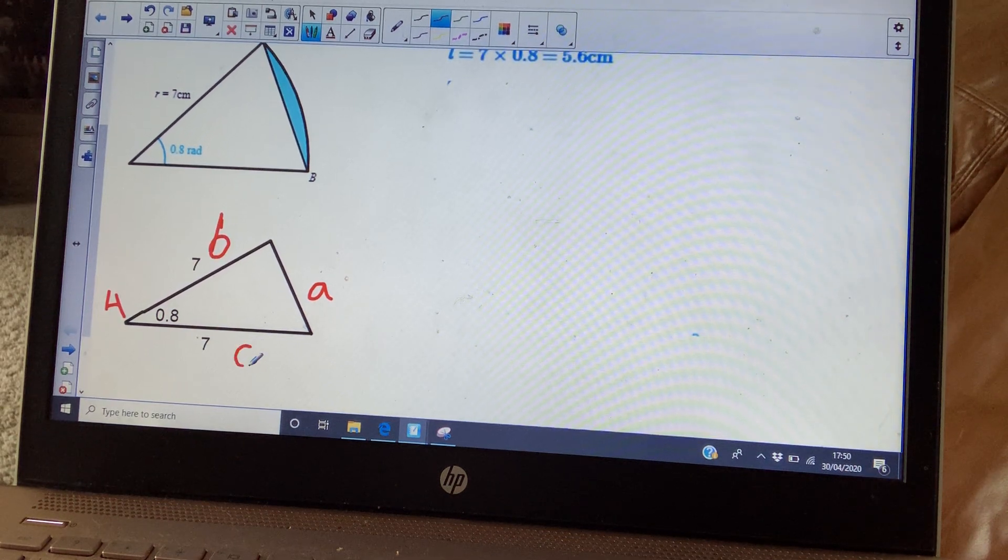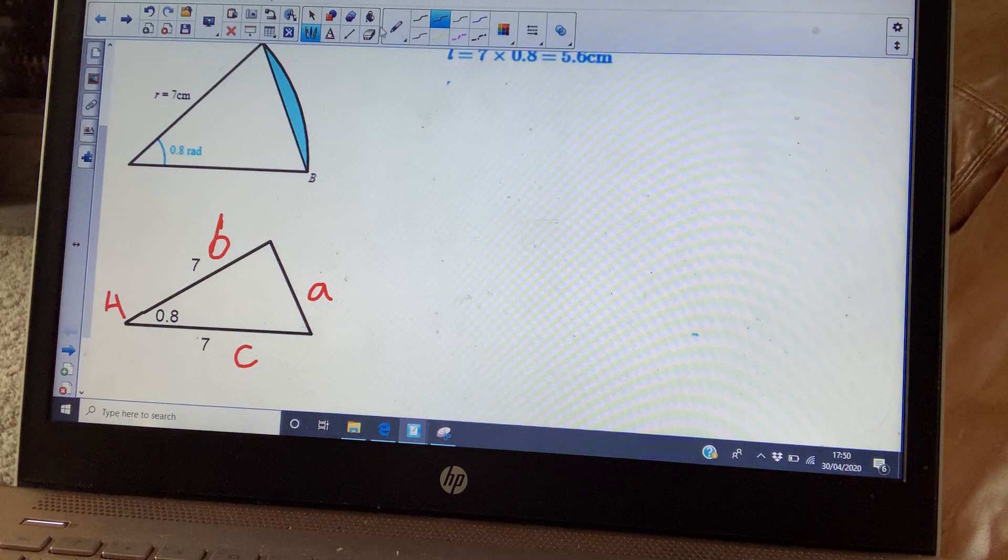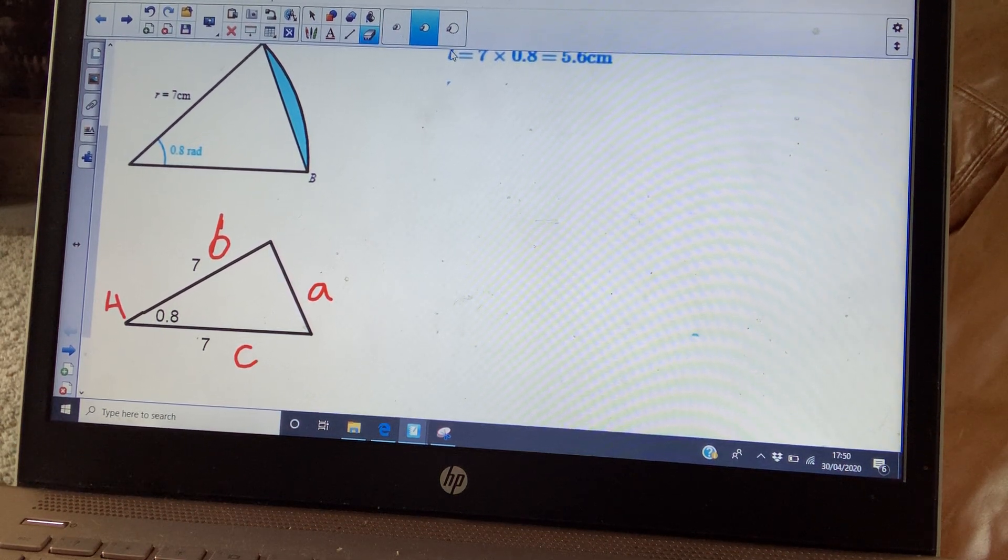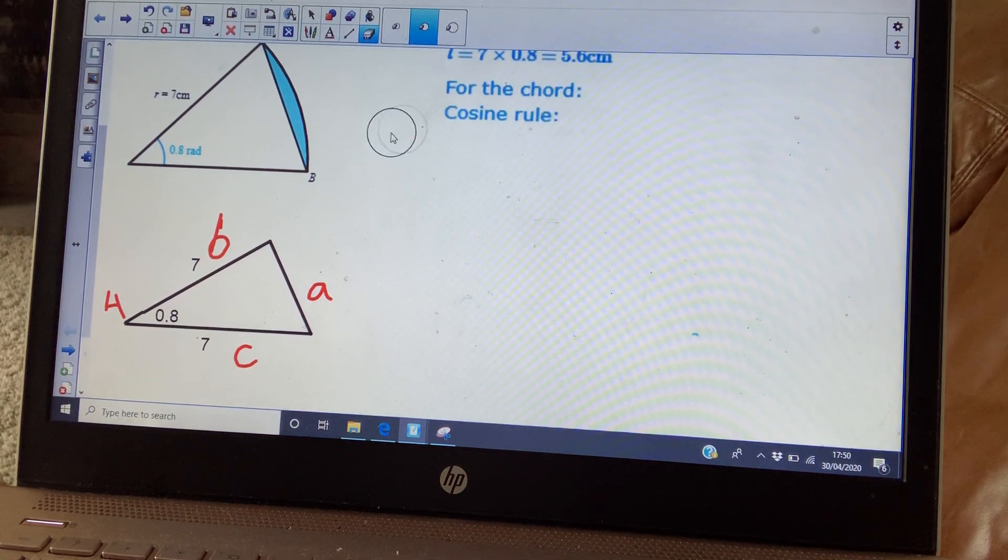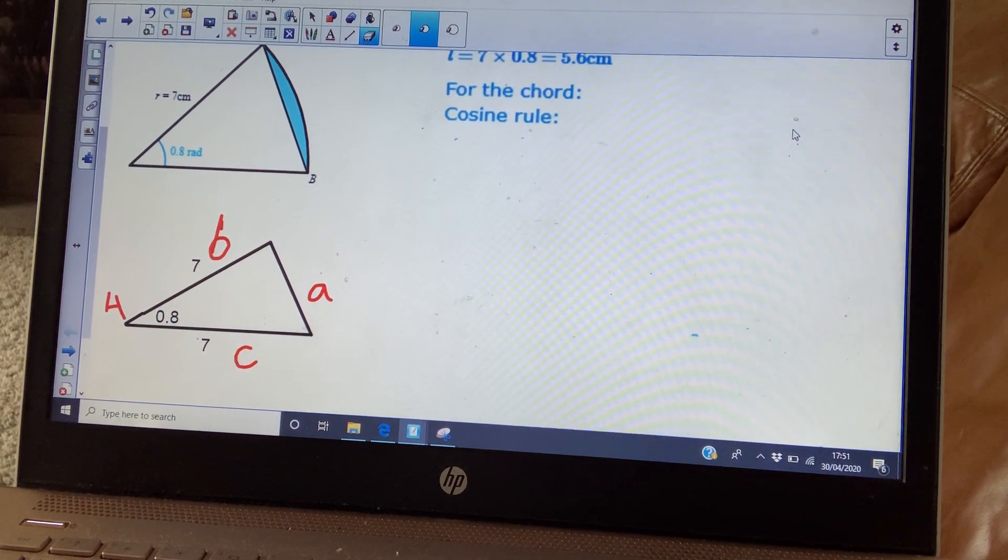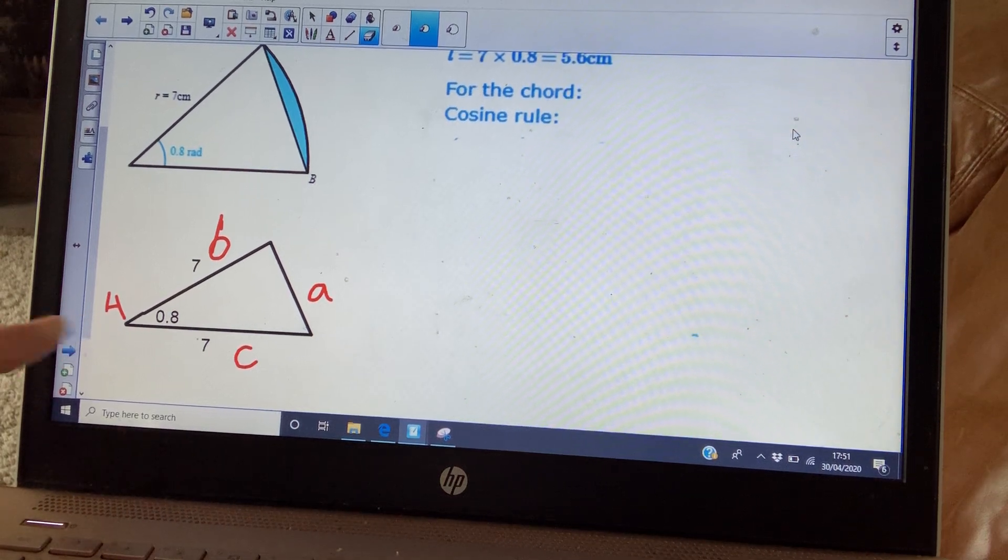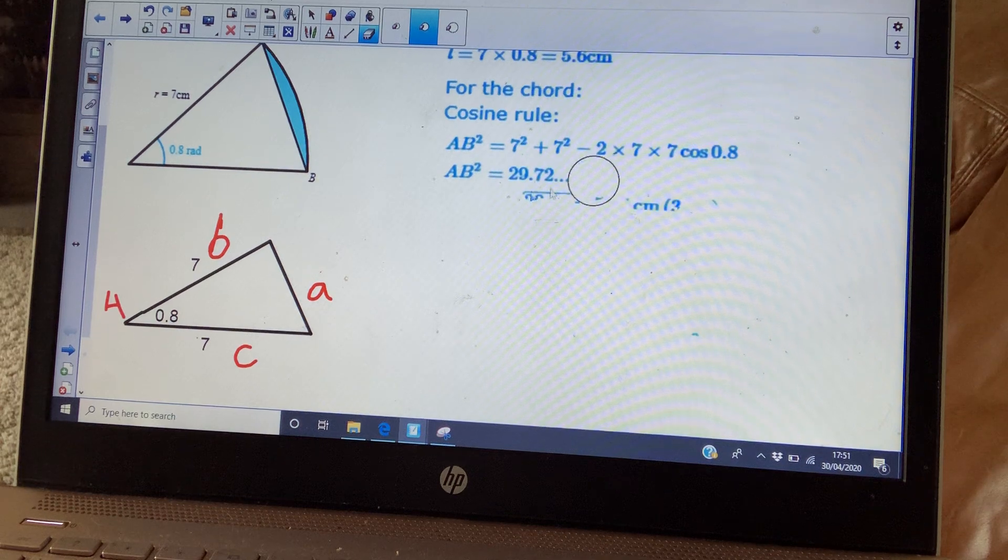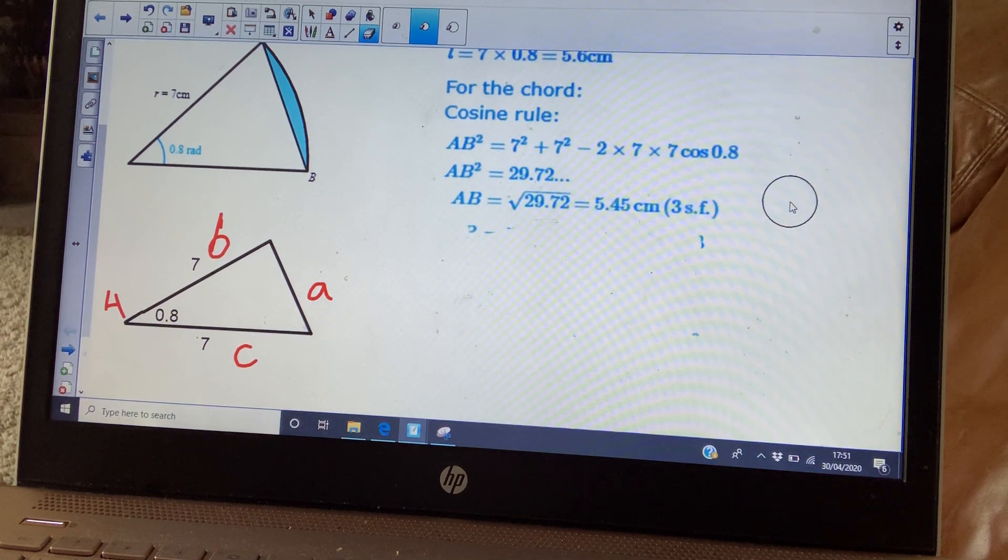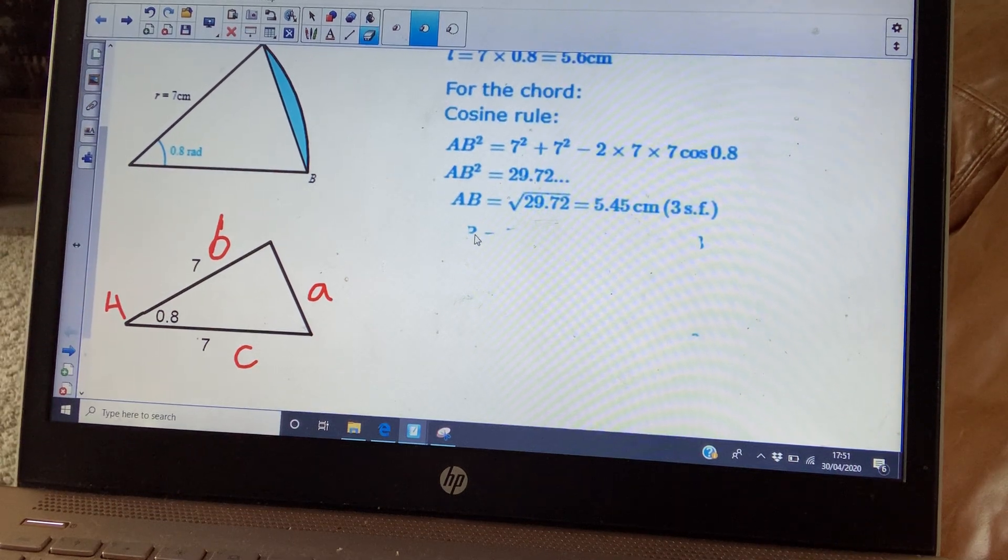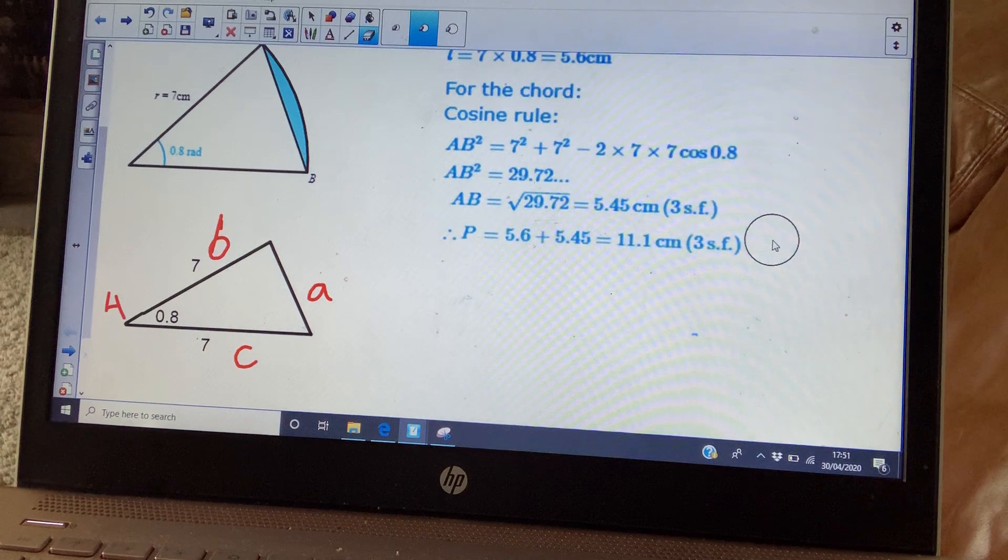So what you'll then do is you will literally use the cosine rule to find that angle. So if you just think about what your cosine rule is: a squared equals b squared plus c squared minus 2bc cos capital A. So if you put those in and you can work that out. So there's the length of that chord. So all you now need to do is add them together.